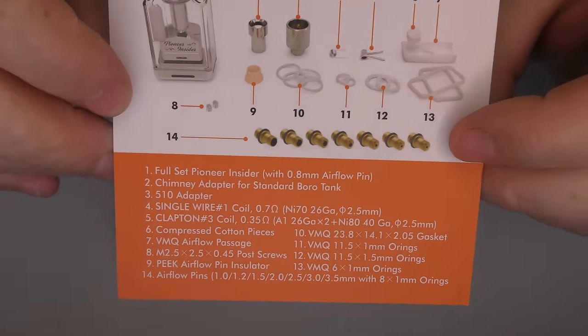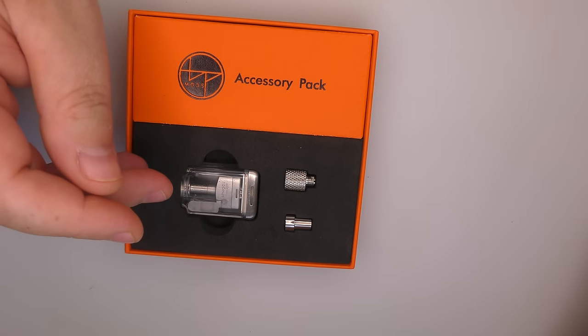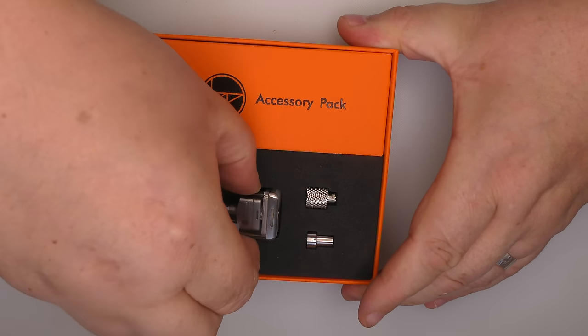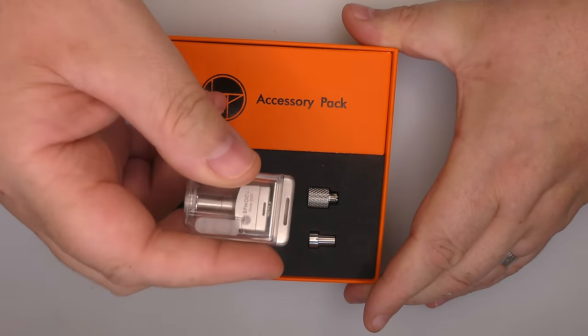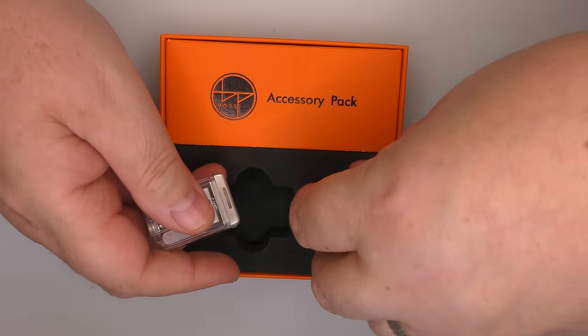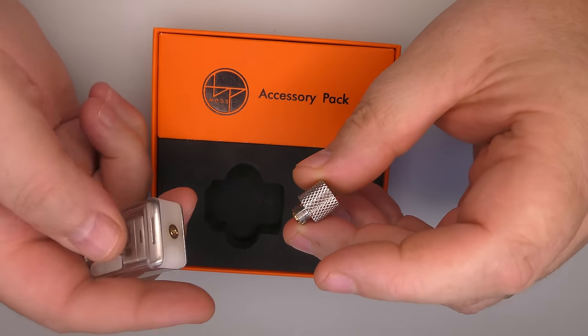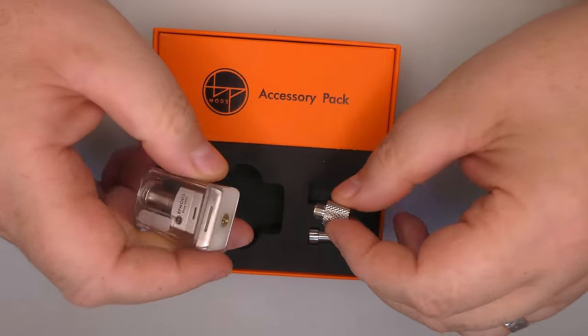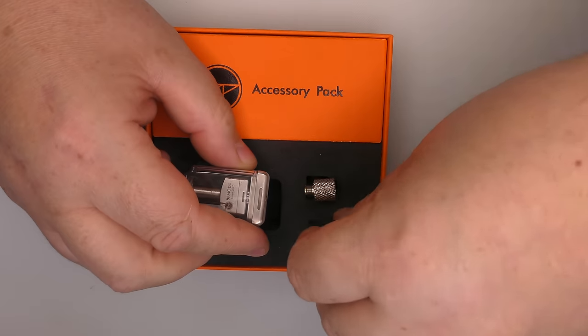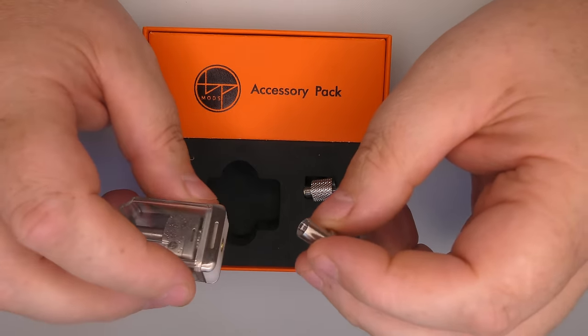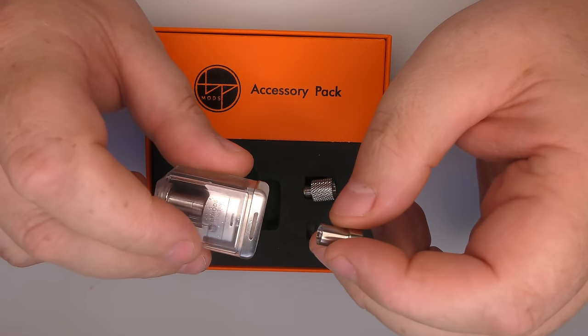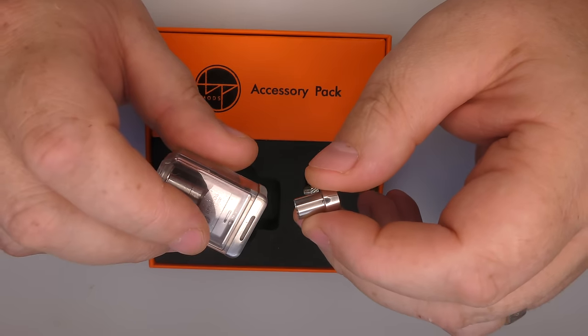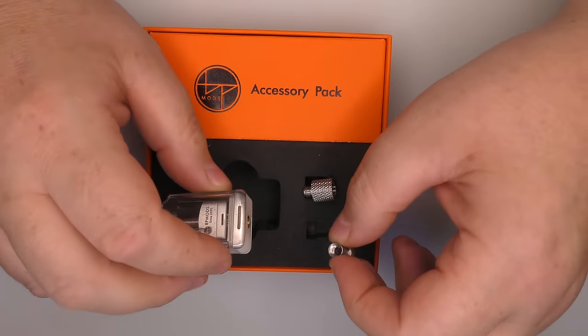So there's a card, everything on here. I will pop this over here so I can reference it as we talk along. Inside you're going to find one Boro tank device with an RBA inside it. You will find a 510 adapter because obviously when you want to pulse your coil and before you put your cotton in you'll need this doodah bitty thing here and you'll also need this doodah bitty thing here if you want to use this inside a standard Boro device, Boro tank or you want to use it in something like the Abyss.